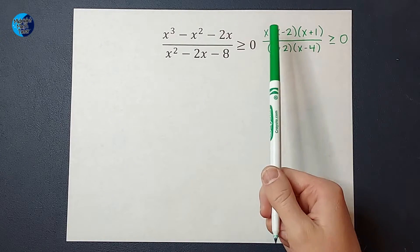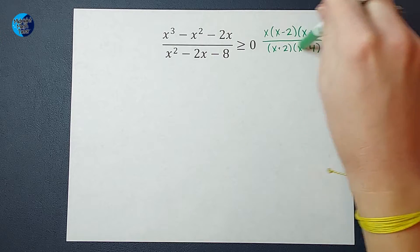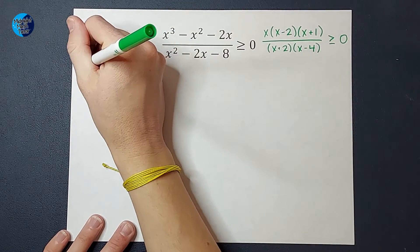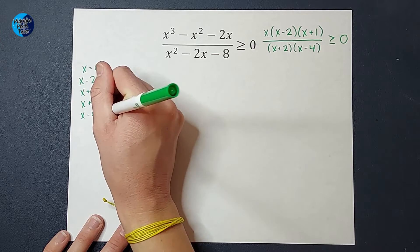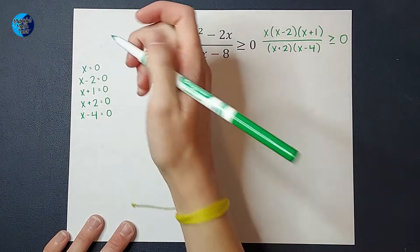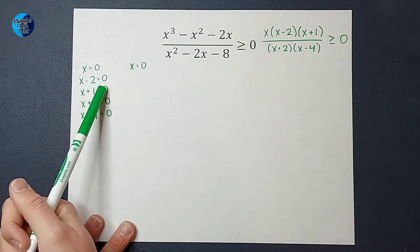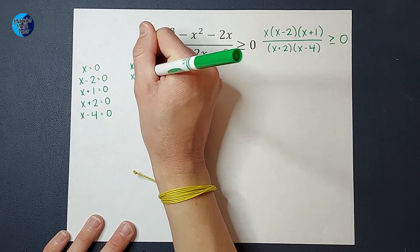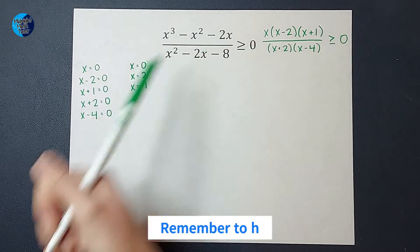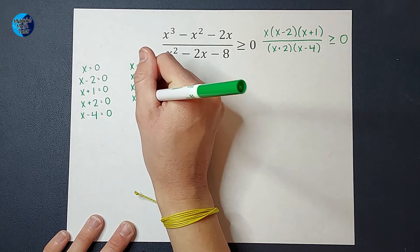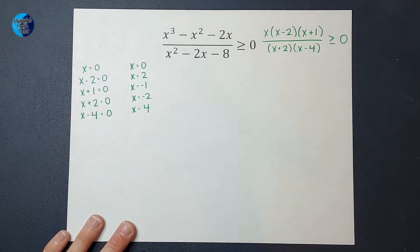From here, I am going to set each of these equal to 0, so I'm going to have five things I'm setting equal to 0. Now I'm going to solve each of these for x. This one is already solved: x equals 0. I would add 2 to both sides to get x equals 2. Subtract 1 from both sides, get x equals negative 1. Subtract 2 from each side, get x equals negative 2.